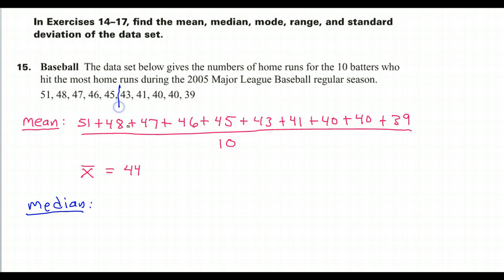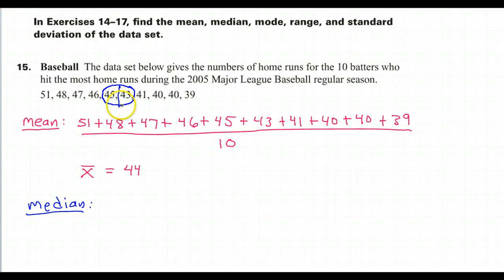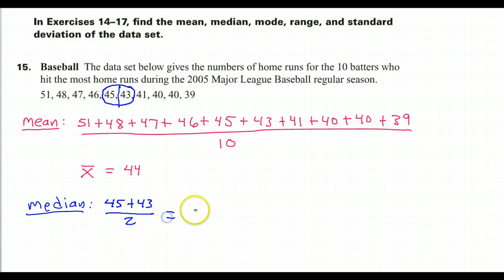So this is the middle right here — five numbers on the left, five numbers on the right. So 45 and 43 are the middle two numbers. If there were an odd number of numbers, we would just have one middle number and that would be our answer. But if there are two middle numbers, you have to find the mean of those two numbers — add them up and divide by two. So 45 plus 43 divided by two gives us 44. The mean was 44, and the median is also 44.